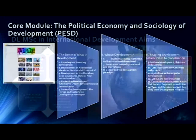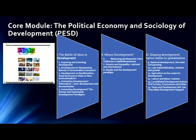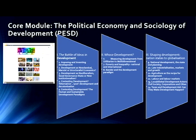This is the core module — the programme is based on a core module. This gives you the key principles and theories of the development programme. We start off with a battle of ideas in development, looking at ways of imposing and inventing development, looking at development as neoclassical, Marxist, or structural economics. We look at development as neoliberalism, good governance, state, or the new institutionalism. We look at processes of contesting development, alternative development, post-development and decolonisation, and the human sustainable development paradigm. We take a whole body of political literature that has shaped the way we think about what development is, how it takes place, what power is involved, and how changes are made within those systems and structures of power.